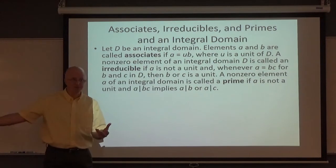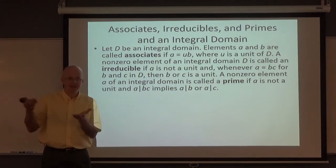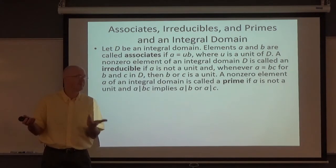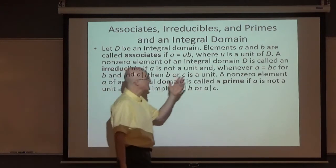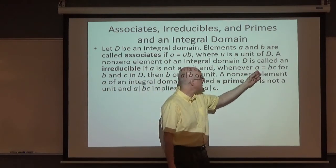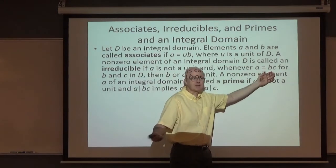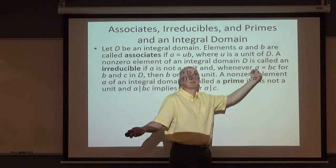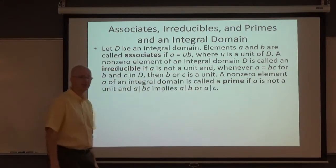For the integers, primes and irreducibles do mean the same thing. In the integers, allowing for negative factors, the units are plus or minus one. Something like seven, which is prime and also irreducible in the integers, can only be written as seven times one, or negative seven times negative one — you can only factor it in trivial ways.